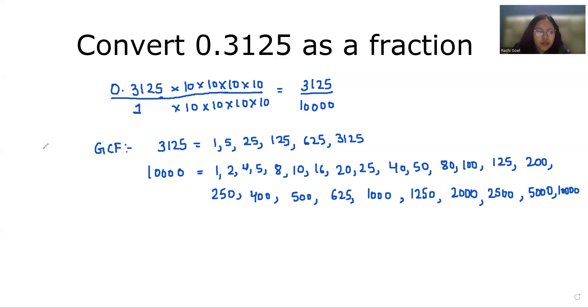Now the greatest common factor in both cases is 625. So we'll divide both numerator and denominator by 625. So we get 5 by 16.